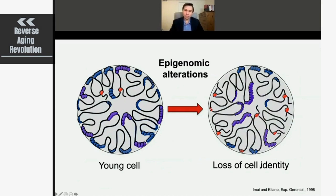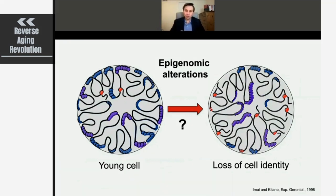Over time, we see changes in those patterns: genes that should be left on become switched off and vice versa. We believe this is leading to a partial loss of cell identity. The question is why and how does it happen? We can do two tests — one of which we've actually performed is testing cellular perturbations.